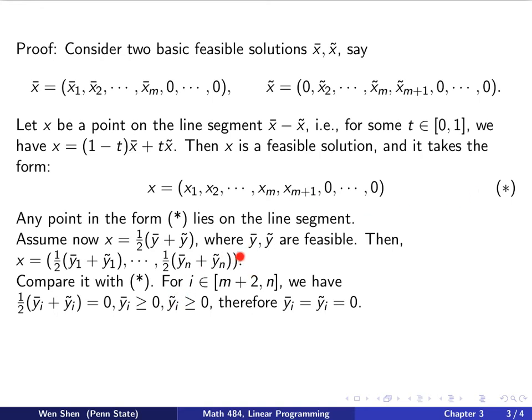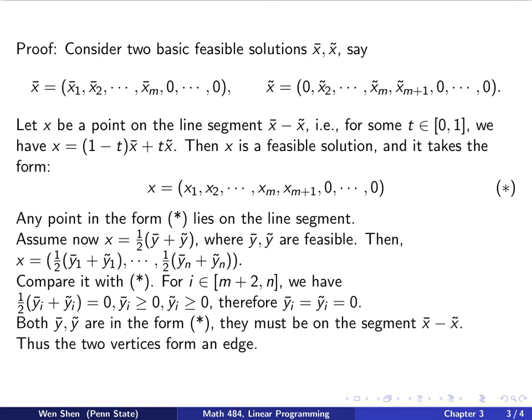In particular, I'm interested in the elements with index bigger than m plus 1, meaning actually it's 0 here. So that then I would know that for i bigger than m plus 1, we would have all these elements 0. So a half of y bar i, y tilde i add up shall be 0. And I also know that both of these y's are bigger than 0. And then we have seen this argument before. If that is the case, then you conclude those y bar i, y tilde i must both be 0.